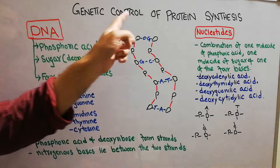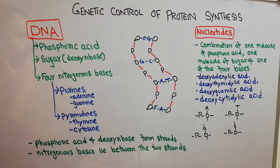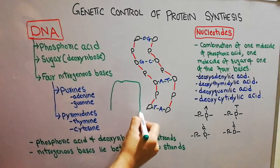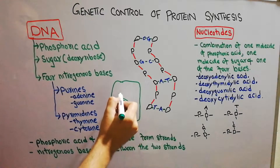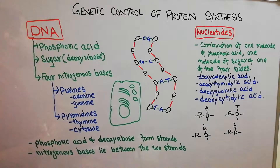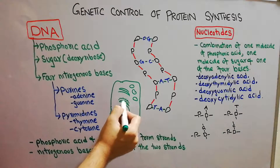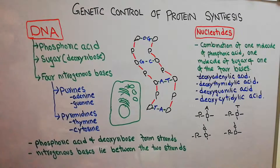Today we are going to discuss the genetic control of protein synthesis — how genes control the synthesis of protein. In the last few lectures we discussed that the cell has a lot of organelles like the nucleus, surrounded by endoplasmic reticulum, Golgi apparatus, vacuoles, peroxisomes, etc. Most of the proteins are formed in the endoplasmic reticulum through ribosomes, then transferred to the Golgi apparatus where they are packaged into vesicles. The signal for protein formation comes from the nucleus.